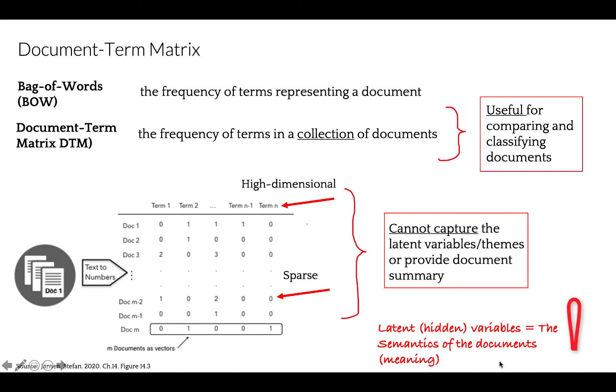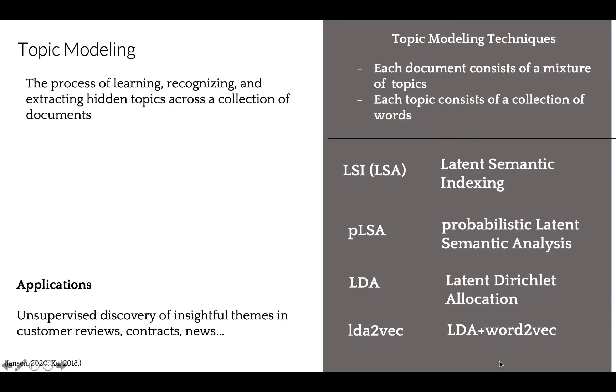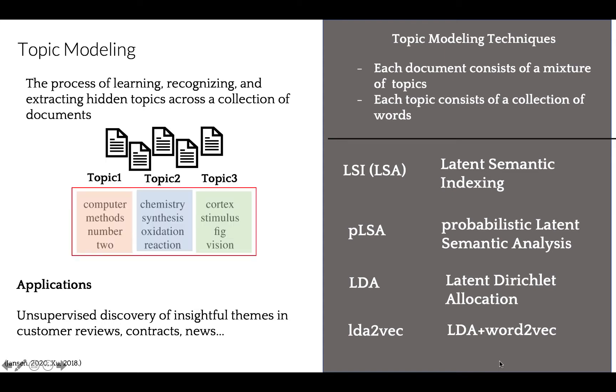Latent themes came from the idea that documents are actually governed by some hidden or latent variables that we are not observing. These variables represent the meaning or semantic of the document. The process of learning, recognizing, and extracting hidden topics across a collection of documents is called topic modeling, which is very useful for discovery of potentially insightful themes in customer reviews, news articles, legal contracts, and so forth. All topic models are based on the same basic assumption. Each document consists of a mixture of topics, and each topic consists of a collection of words.